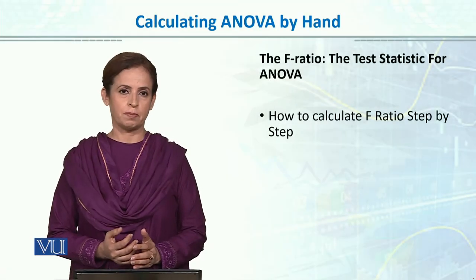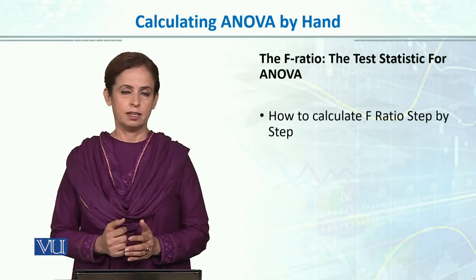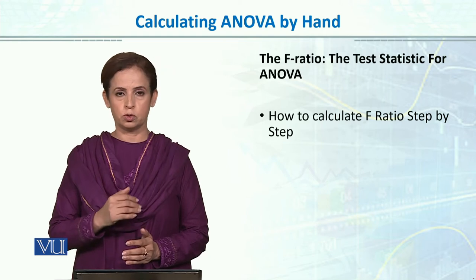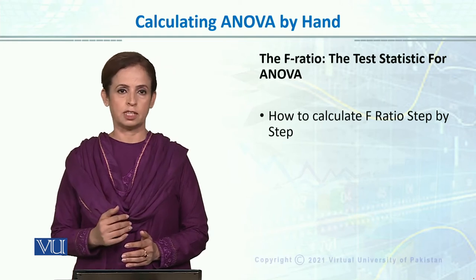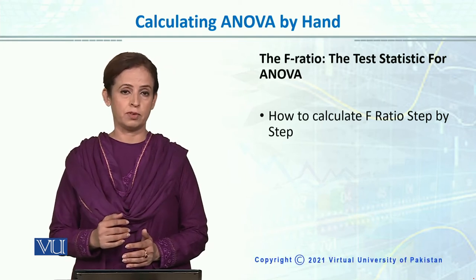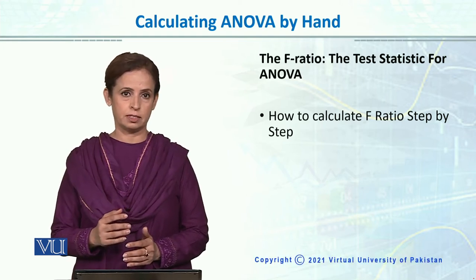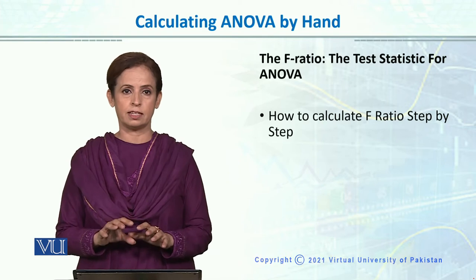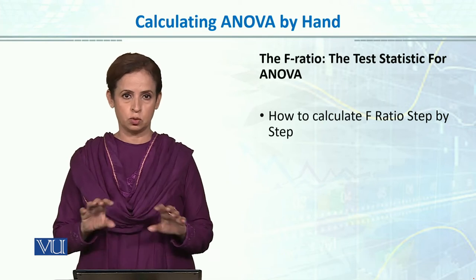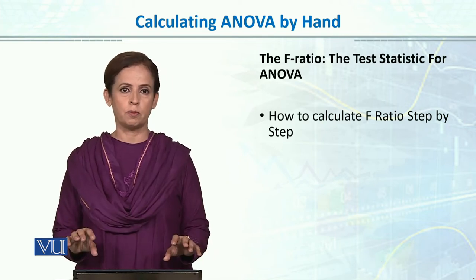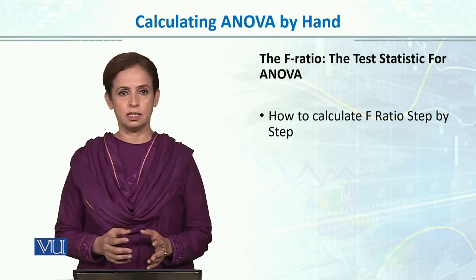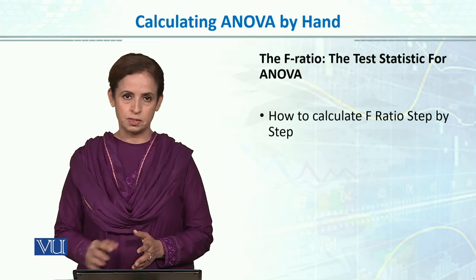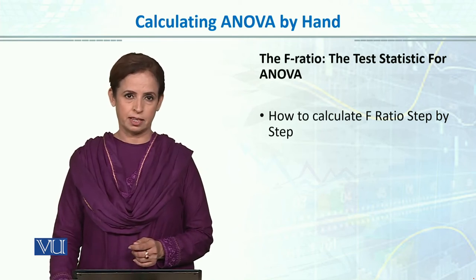We have to go through the notational system step by step. We have to calculate the total variance, then divide that variance into smaller parts, and then calculate the F ratio. So now we have to calculate the F ratio step by step.